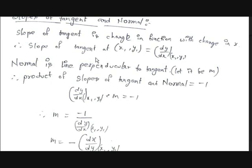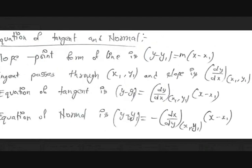The normal is a line which is perpendicular to the tangent at that particular point, and it also passes through that point. Let the slope of the normal be m. We know that the product of slopes of two perpendicular lines is negative 1, so (dy/dx at x1, y1) × m = -1. Therefore, m = -1 / (dy/dx) = -dx/dy at (x1, y1).